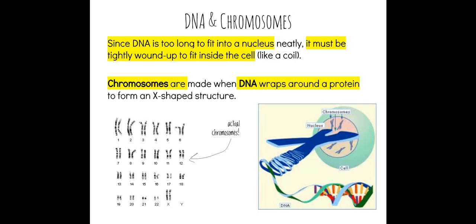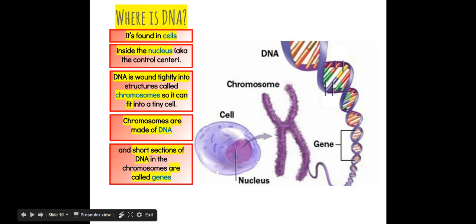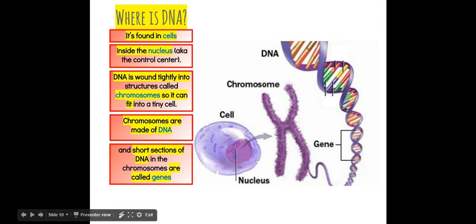Chromosomes are made when DNA wraps around a protein to form an X-shaped structure. When that DNA wraps up into a coil and wraps around a protein, it forms what's called a chromosome. Here you can see an actual sample of chromosomes from a human — this is what they would look like under a microscope. DNA is found in cells inside the nucleus of eukaryotic cells, and it's tightly wound into structures called chromosomes so it can fit into the tiny cell.